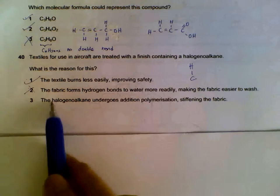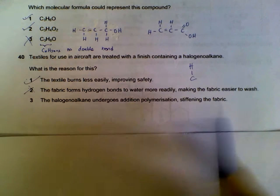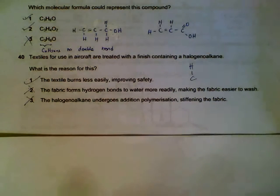If two is wrong, three will be wrong. The halogen alkenes undergo polymerization to stiffen the fabric. This would be wrong. Since we eliminated two already, only option one is correct.